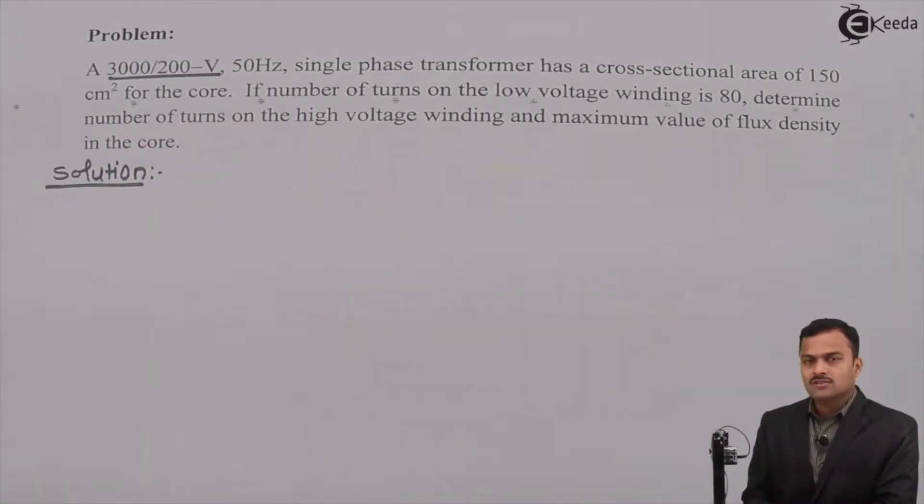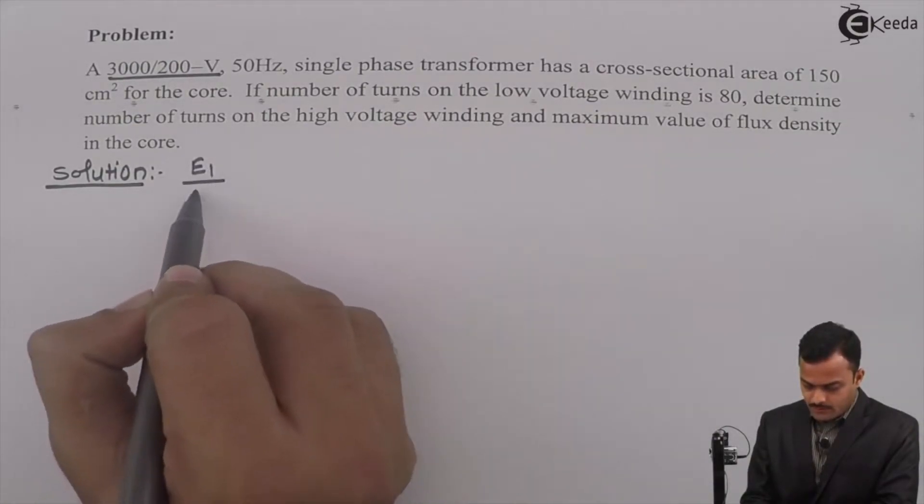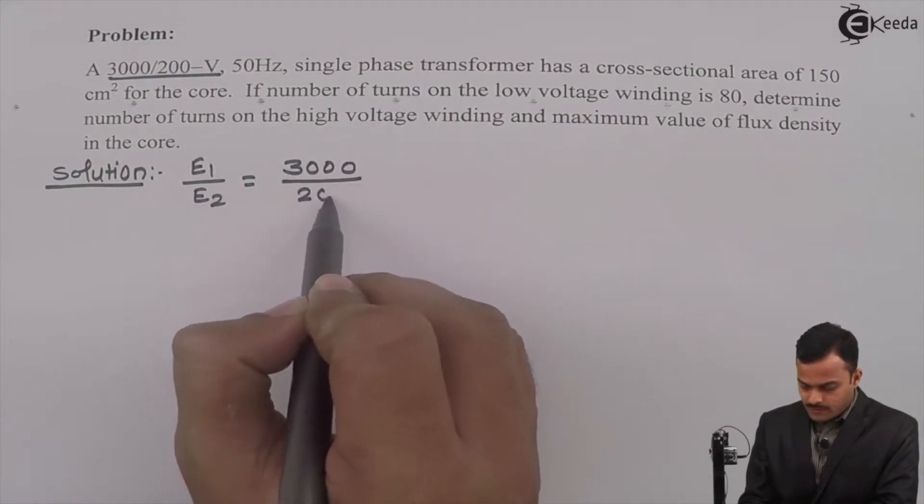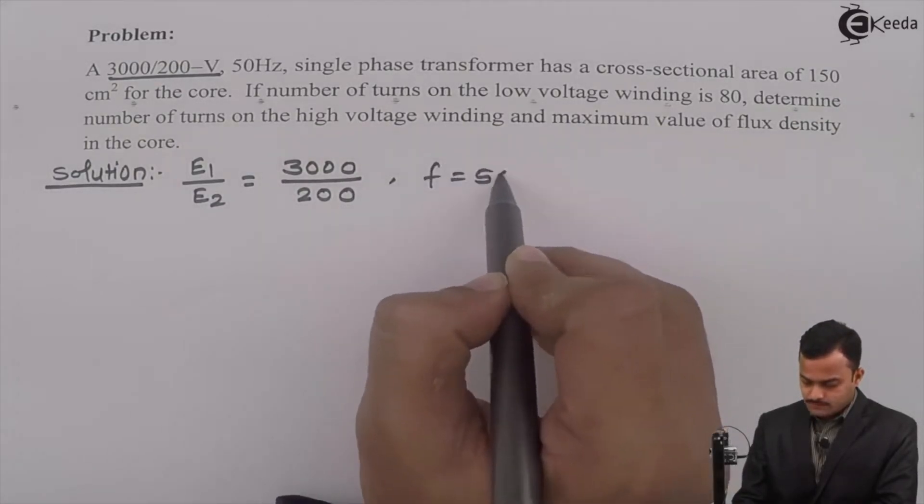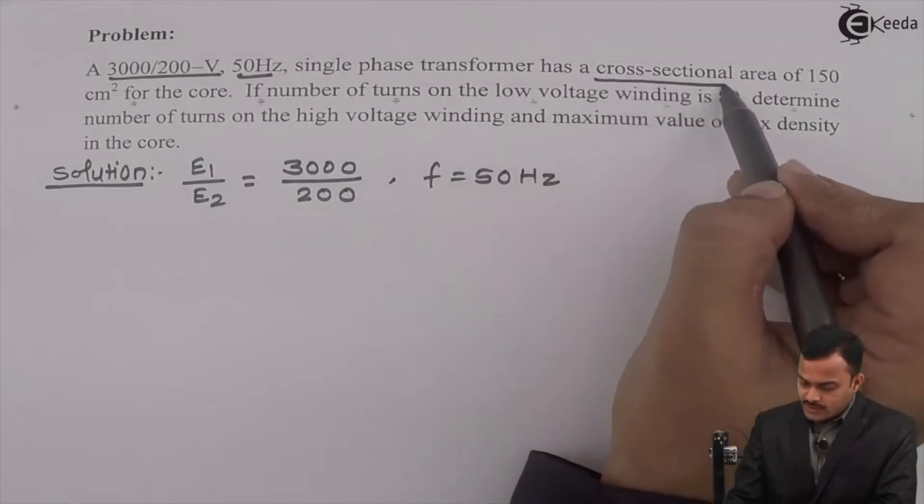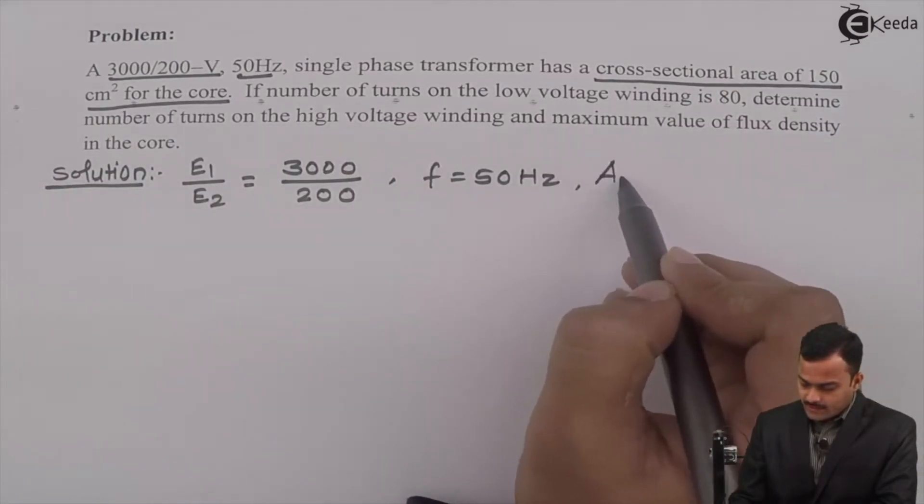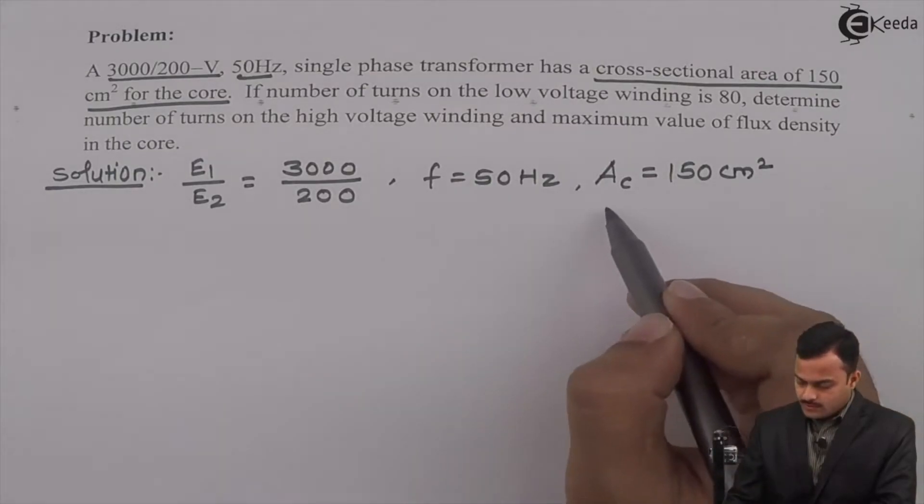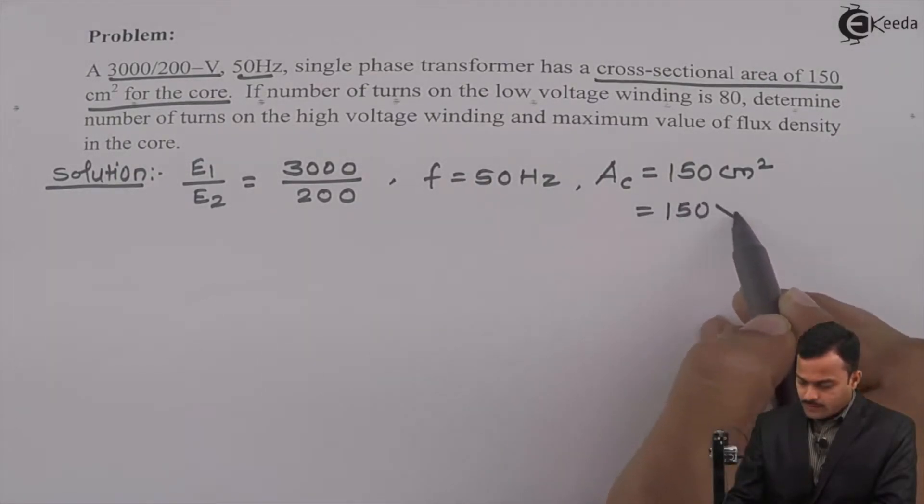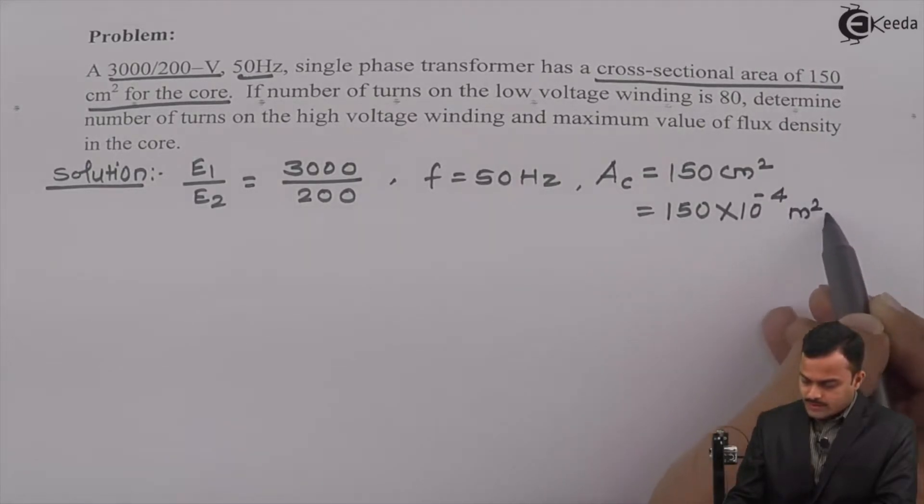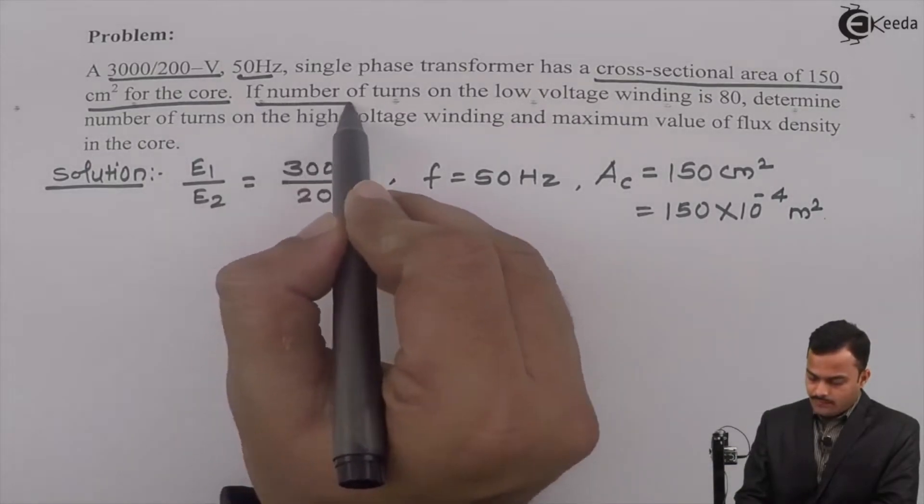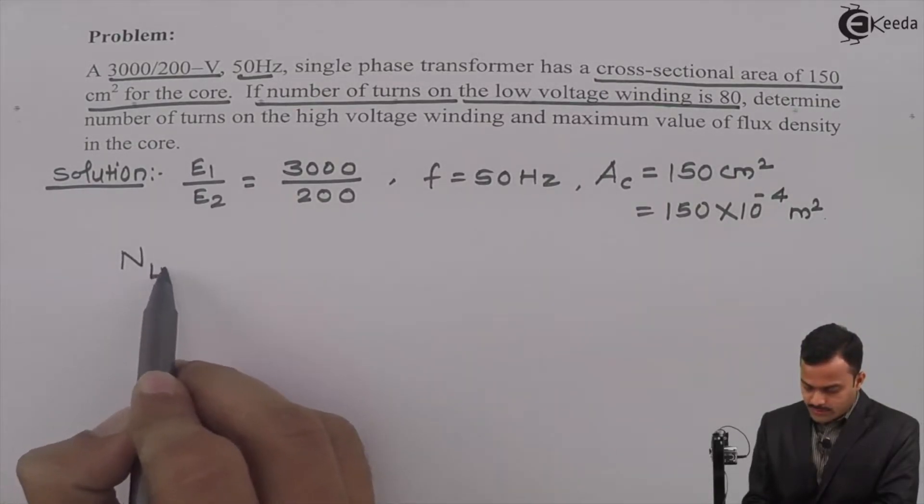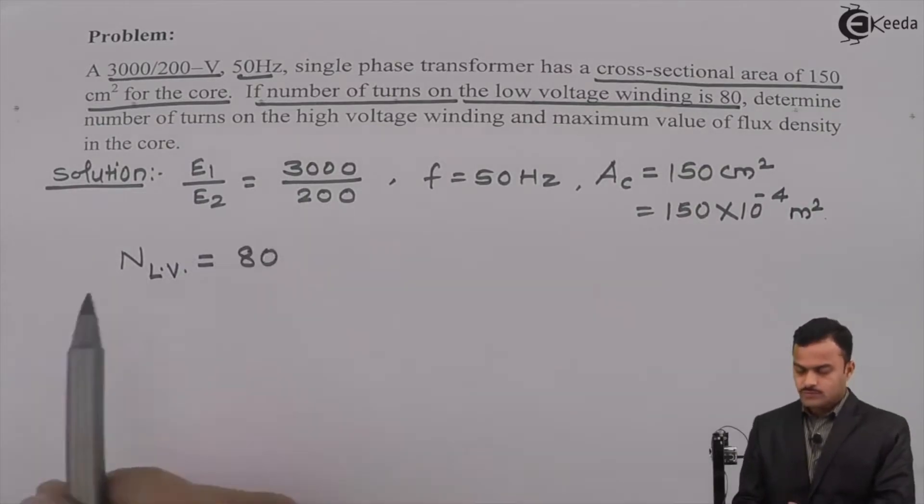A voltage ratio is given, so E1 upon E2 equals 3000 divided by 200. Frequency is 50 Hertz. Cross-sectional area of core, AC, equals 150 centimeter square. We need to convert this into meter square, so this equals 150 multiplied by 10 raised to minus 4 meter square. And number of turns on the low voltage winding equals 80.